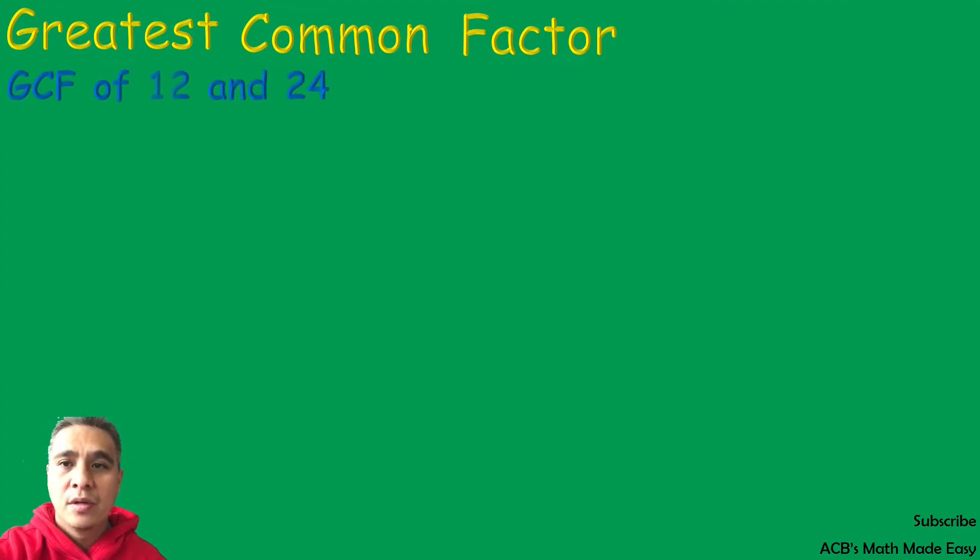Our second example is to get the GCF of 12 and 24. 12 can be factored out by 3 times 4, and 4 can be factored out by 2 times 2. The prime factors of 12 are 2, 2, and 3.